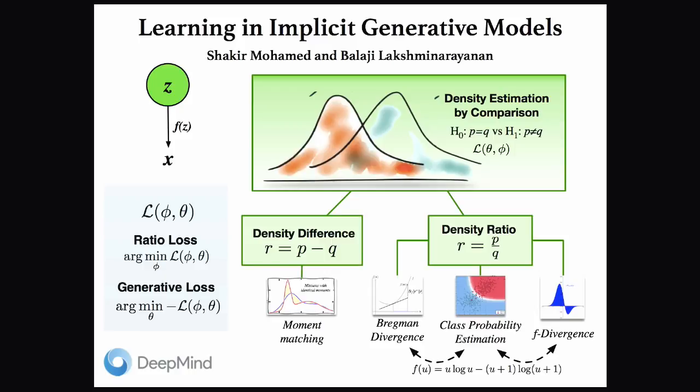In the other category you have the density ratio methods, which look at doing testing by computing the ratio of P, the true data, to Q, the other dataset. The most common way is by class probability estimation — it's a very simple derivation. This is the standard technique used with GANs in climate science, ecology, and high energy physics. But you don't only need to use a classifier; the F-divergence is called the integrated Bayes' risk, and you can also use the Bregman divergence. They're all related in different ways.